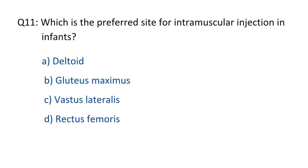Question No. 11. Which is the proper site for intramuscular injection in infants? The right option is option C, vastus lateralis.